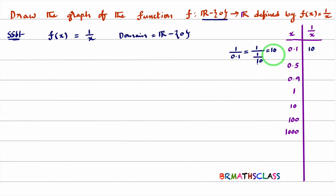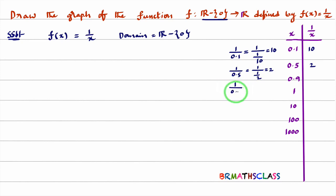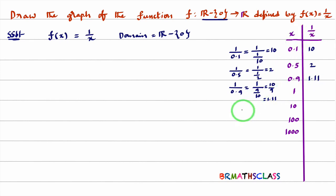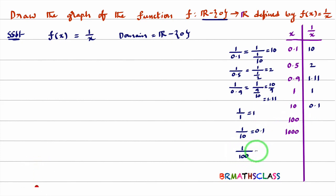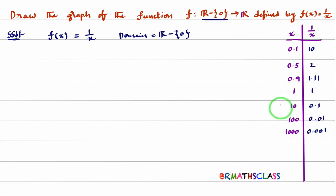When x = 0.5, what is 1/0.5? 1/0.5 can be written as 1 divided by 1/2, which is 2. So its value is 2. When x = 0.9, 1/0.9 = 1 divided by 9/10 = 10/9, approximately 1.11. When x = 1, 1/1 = 1. When x = 10, 1/10 = 0.1. When x = 100, 1/100 = 0.01. When x = 1000, as x values are increasing, these functional values are approaching 0.